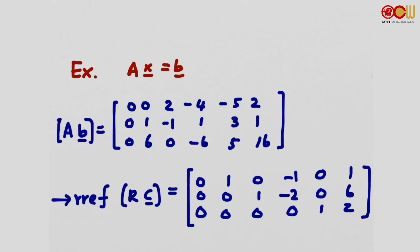Let's use Gaussian elimination to solve a system of linear equations. Suppose we are given a system Ax = b, and the augmented matrix formed by A and b is given. The reduced row echelon form of Ax = b gives us the matrix C, another augmented matrix.